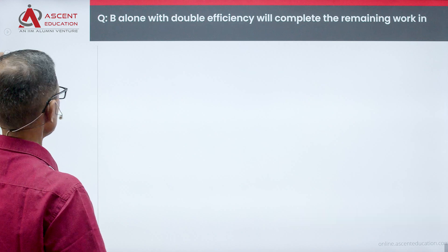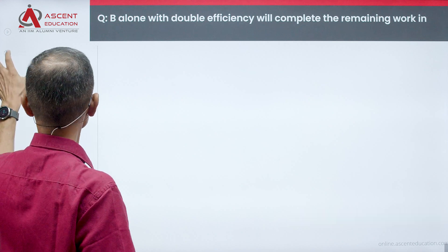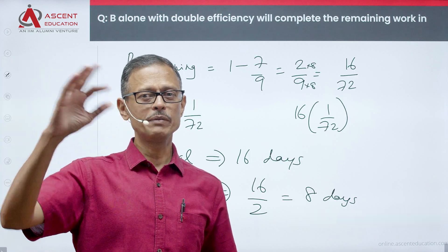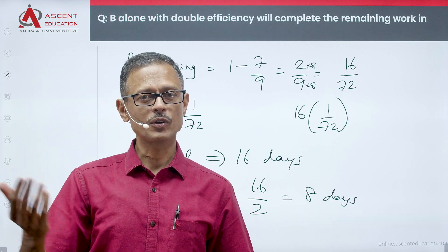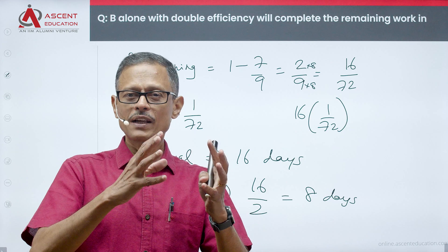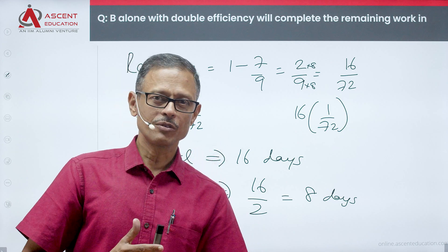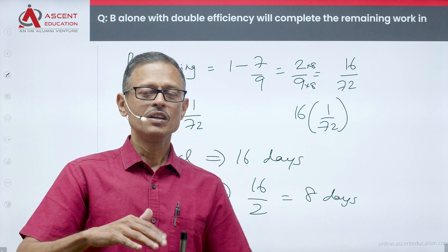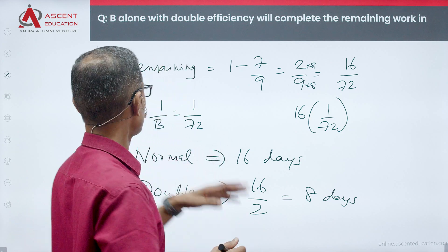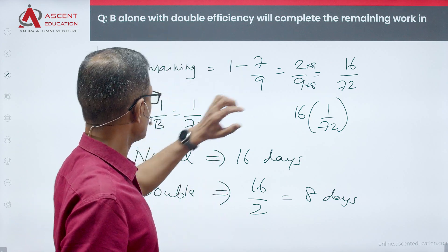So there are multiple steps: first establish 1/A and 1/C in terms of 1/B, then use the combined work equation to find 1/B, then calculate how much work B and C do in 32 days, and finally find the time B alone needs for the remaining work.